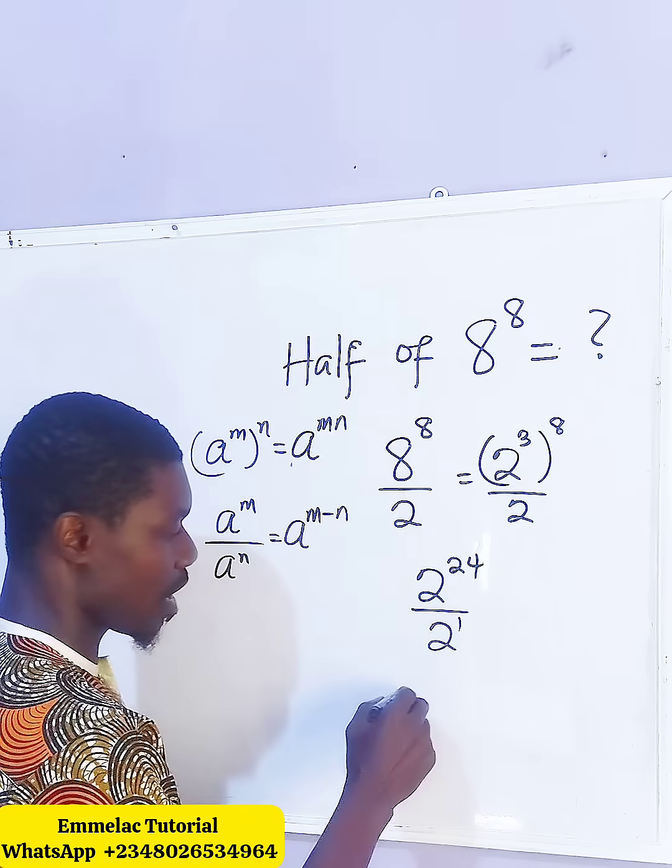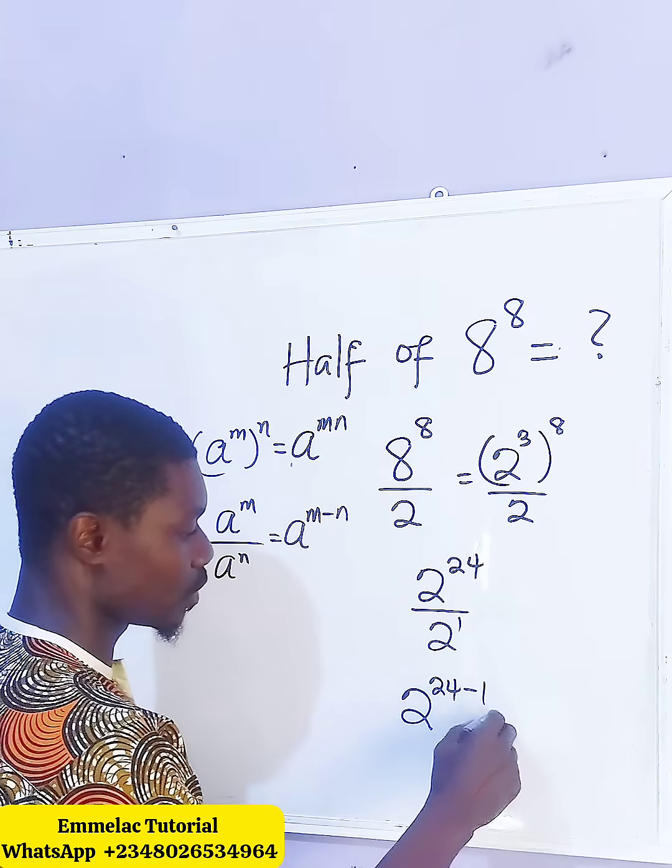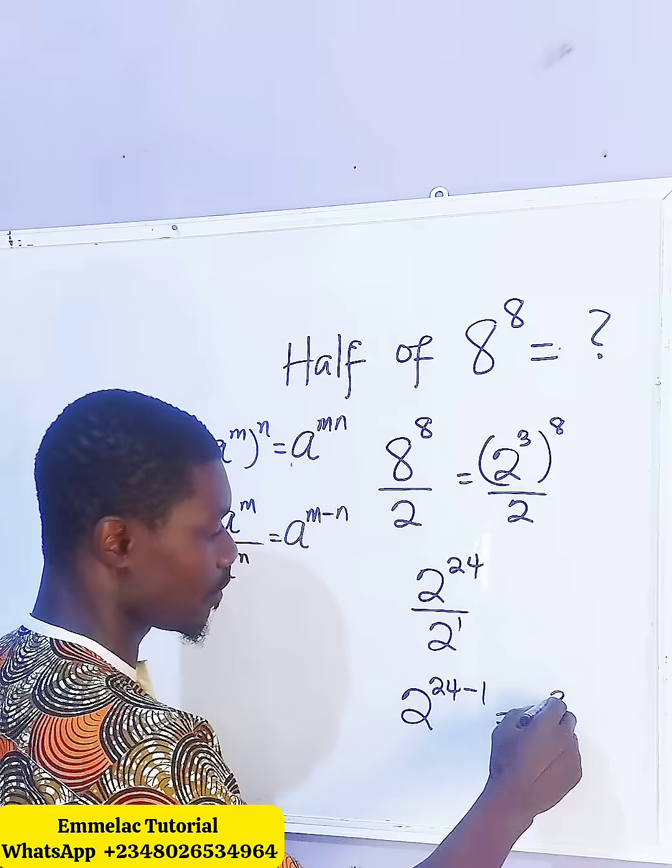Applying that rule here, we have 2 raised to the power of 24 minus 1, which will give us 2 raised to the power of 23.